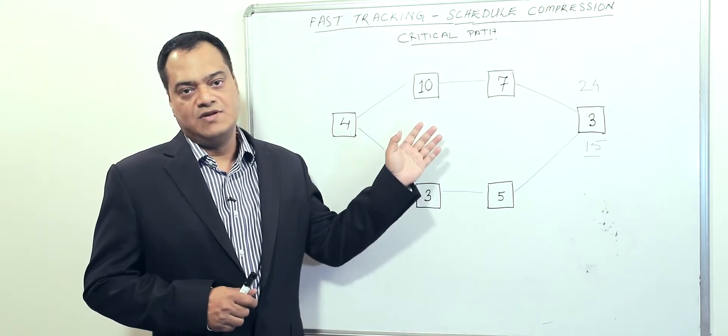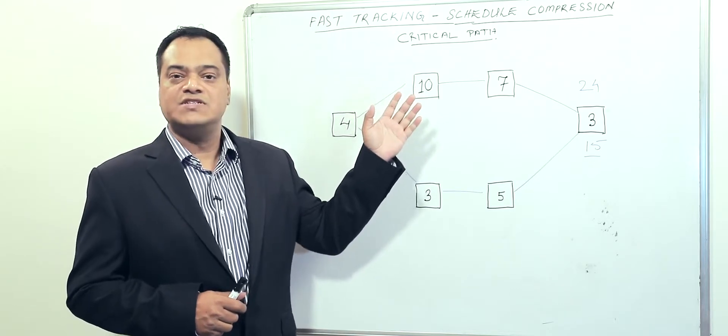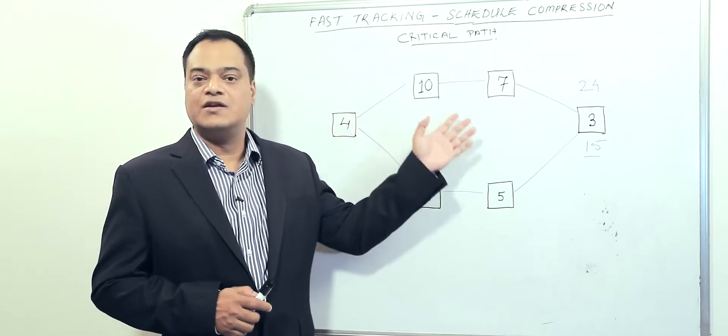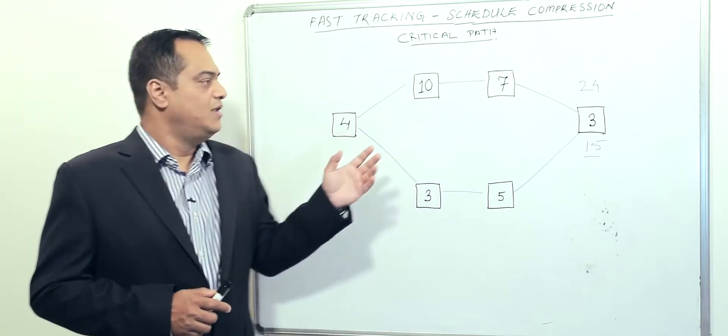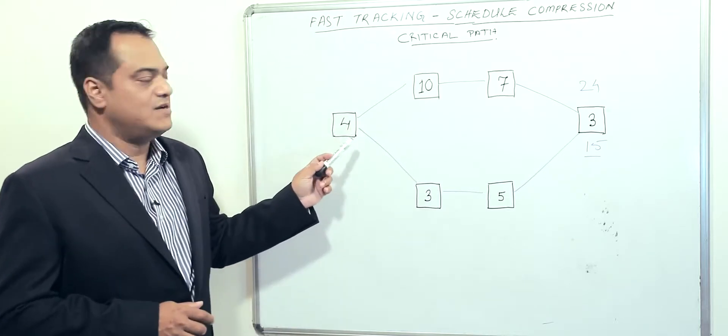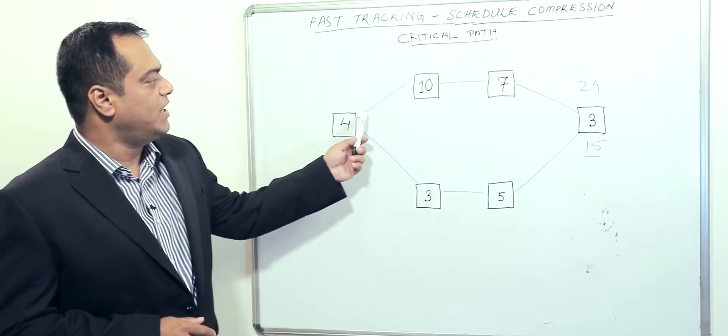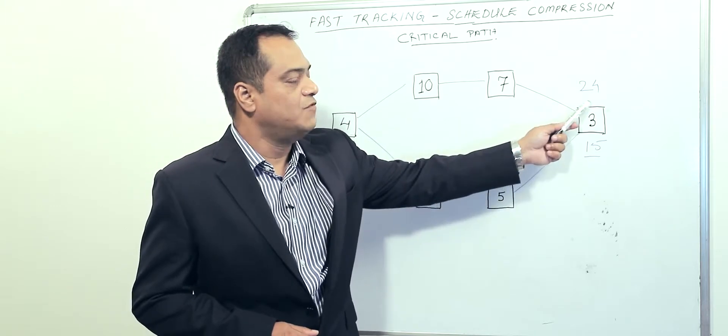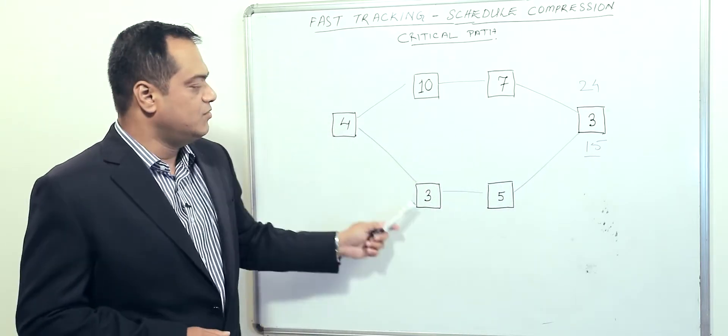We're working on a network diagram, and schedule compression normally happens with the critical path. In this example, we have one path that comes up to 24 days or weeks and another one that comes to 15.